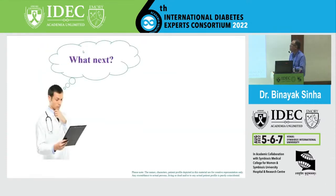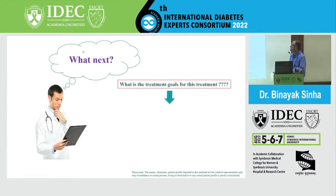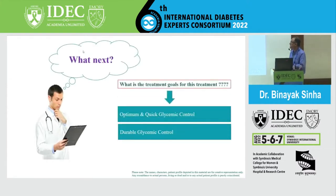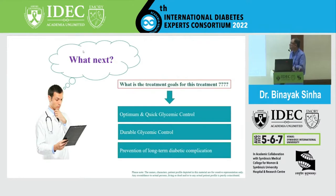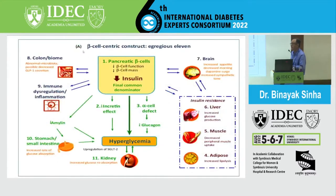The goal is to get his blood sugar controlled quickly and optimally, ensuring he can stay on the same medication for a long period of time and prevent all long-term diabetes complications. To come into a little more theory, this is known as the egregious 11, describing how diabetes is supposed to be evolving.